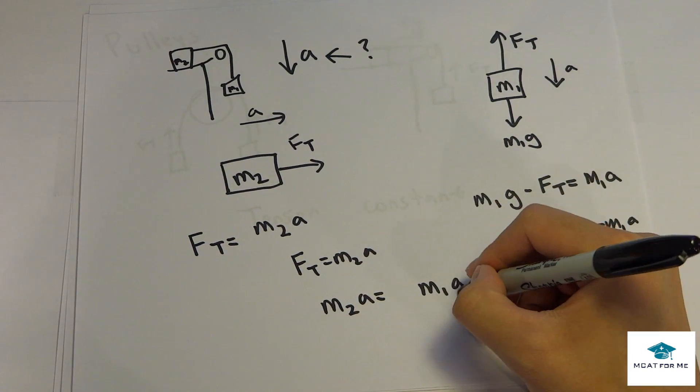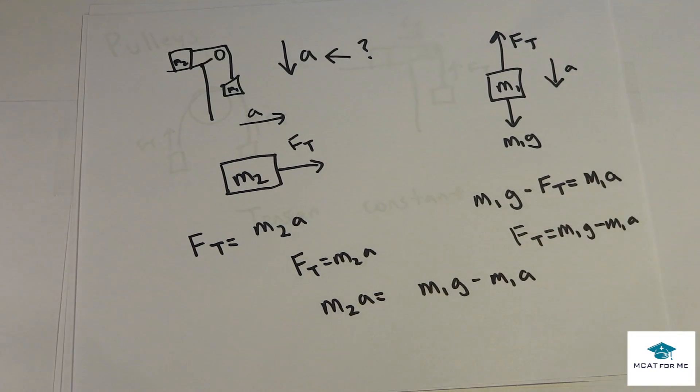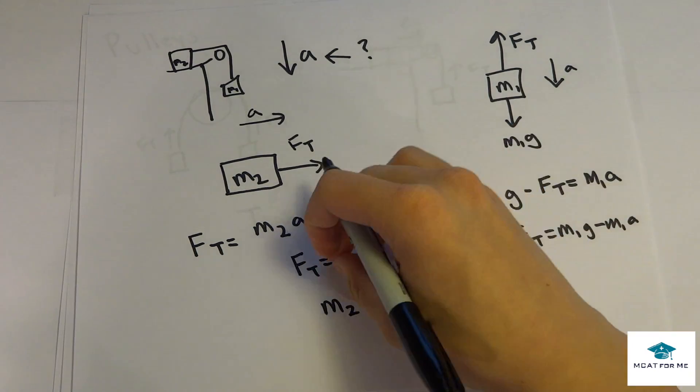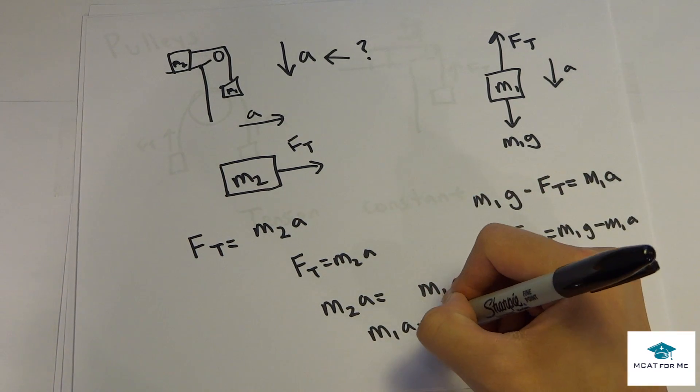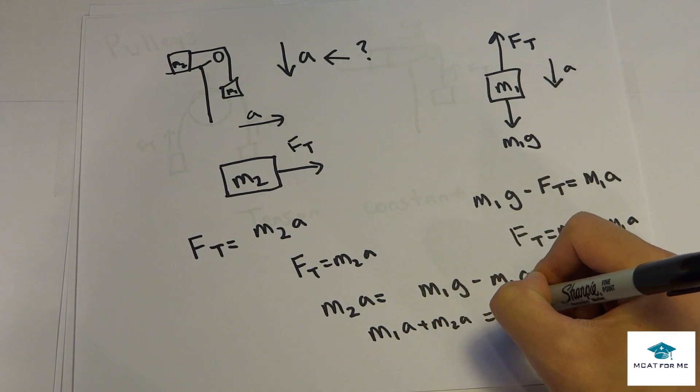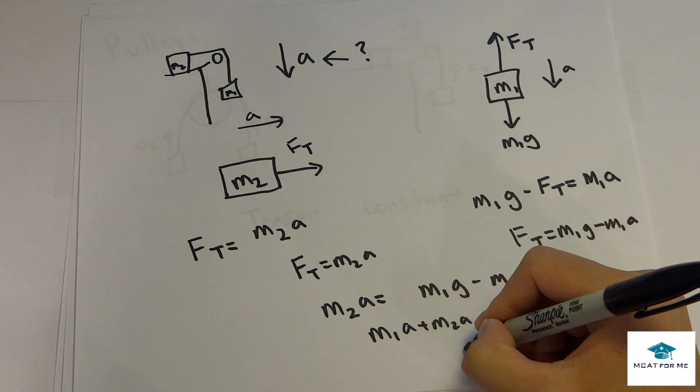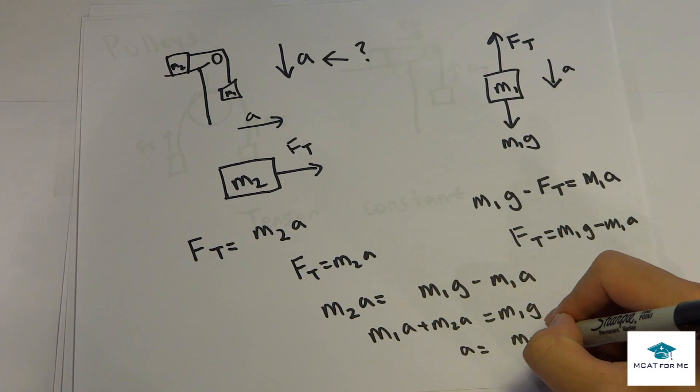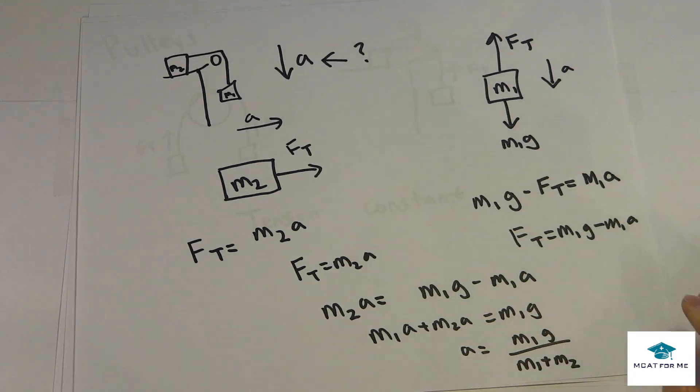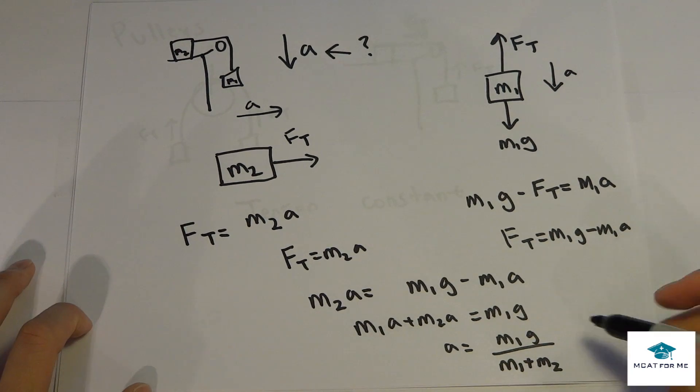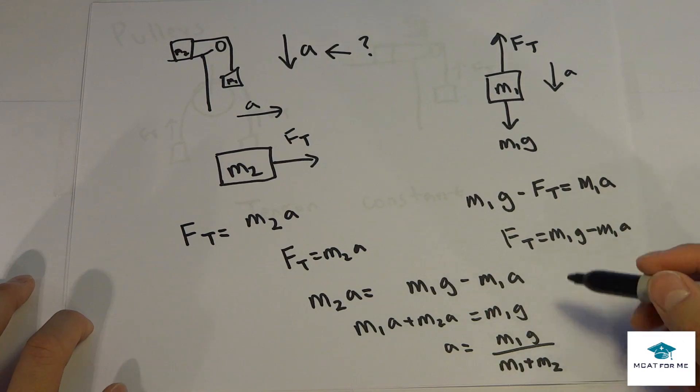Alright? So what do we do with that? We can set these to be equal to each other. That should make sense. ft, if they're both equal to each other, we can put the other sides equal to each other. And so M1a plus M2a equals M1g. And if we manipulate this a little bit, so the net acceleration is going to be M1g over M1 plus M2.